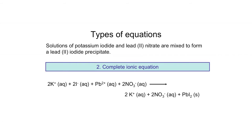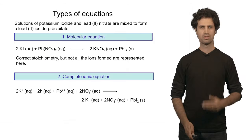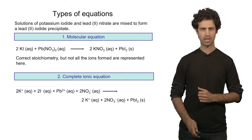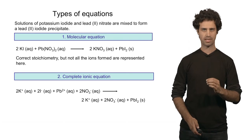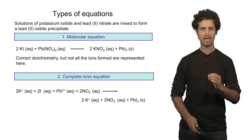On the product side we find potassium ions, nitrate ions, and the precipitate, which is lead 2 iodide. It is a solid and not a strong electrolyte, so it does not split into ions — it is written as a single compound. In the complete ionic equation we write all the ions explicitly; all strong electrolytes are written as ions.